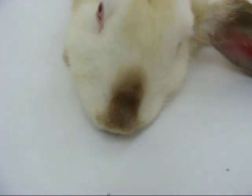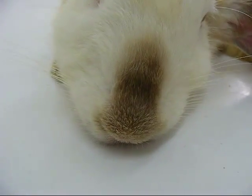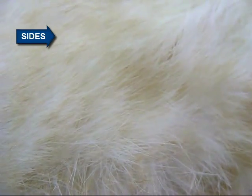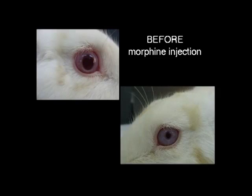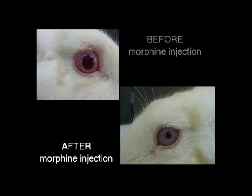Observe the rabbit for respiratory signs and determine the respiratory rate after drug administration. Observe the pupil size again. Morphine causes miosis, that is constriction of the pupil.